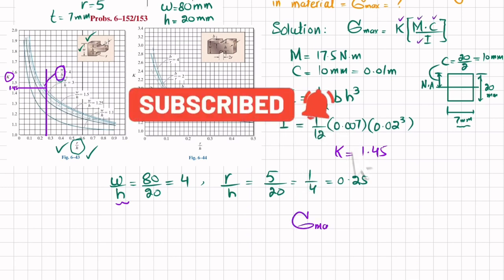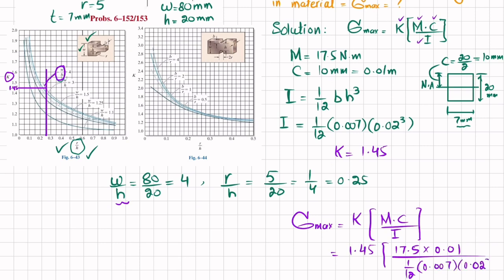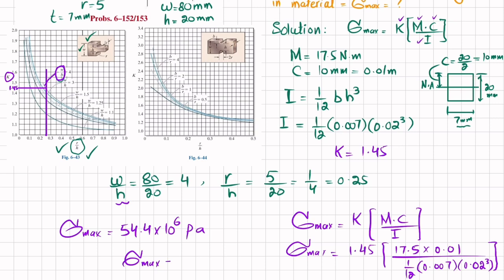Putting all values into the formula: maximum bending stress equals K times M times C divided by I. K is 1.45, moment is 17.5 N·m, C is 0.01 m, and I is (1/12) times 0.007 times (0.02)³. Calculating this gives a maximum bending stress of 54.4 × 10⁶ Pascal, which is 54.4 megapascal.